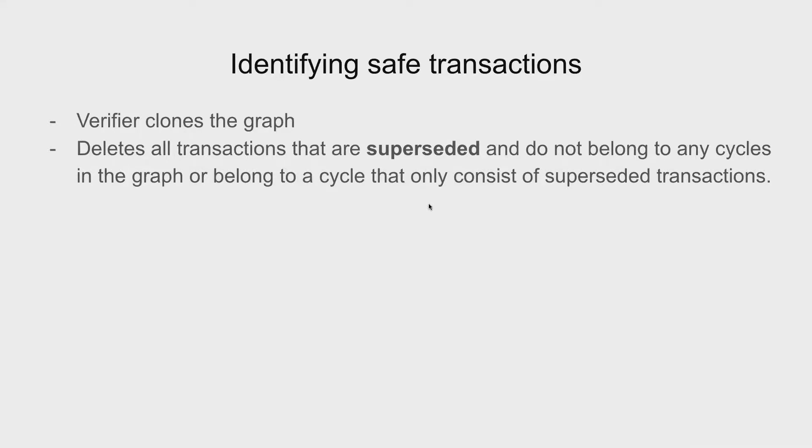So after we have this garbage collection set up for us, we have all the data we need to identify whatever safe transactions are out there in our graph that can be deleted. So for that, the verifier clones the whole graph and it deletes all transactions that are superseded. Here superseded transactions mean all the transactions that contain the most recent rights to a key and they must belong to a previous epoch, not the current agreed upon epoch, a previous epoch. And these superseded transactions must not belong to any cycles in the graph or they can belong to a cycle, but that cycle can only consist of superseded transactions. So in case all of them are superseded transactions, the whole cycle can be deleted safely.